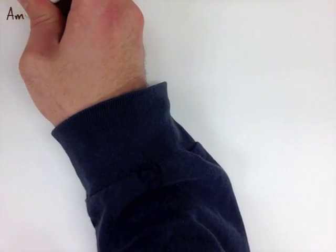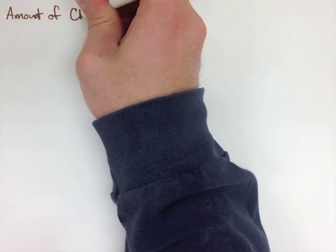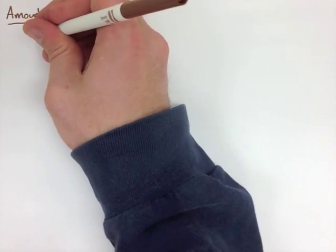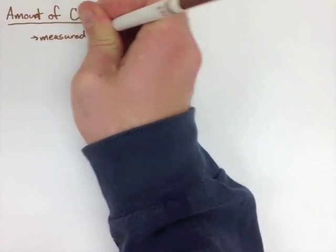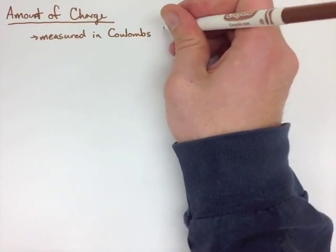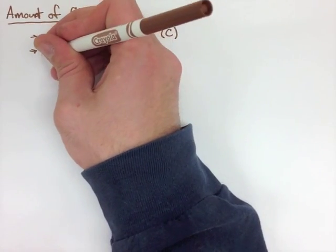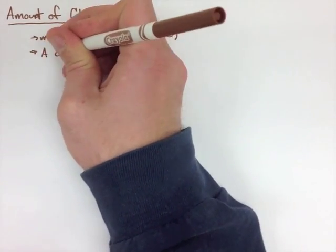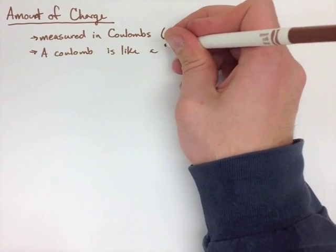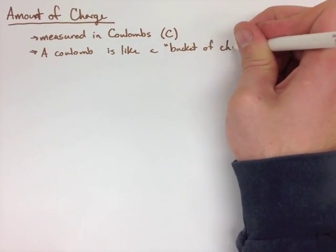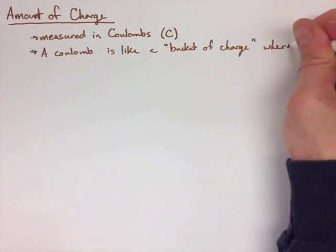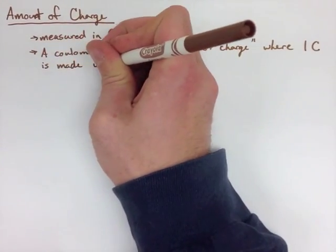Now, when we look at the amount of charge that's in an object, or a point, we measure it in Coulombs, or C. Now, a Coulomb is just kind of like a bucket of charge, or a whole bunch of electrons. When we have 1 Coulomb, it's made up of 6.24 times 10 to the 18 electrons. So there's a whole bunch of charge.